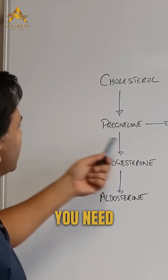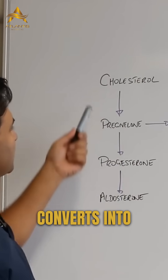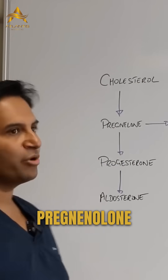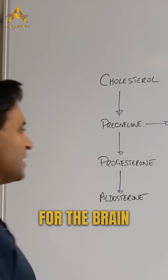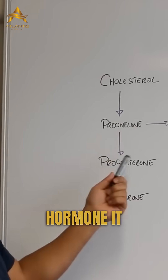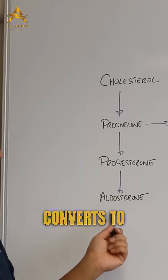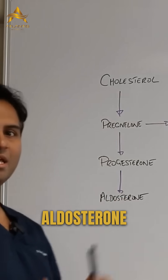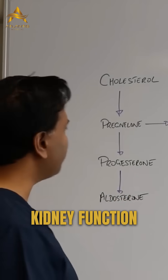Cholesterol converts into pregnenolone. Pregnenolone is really important for the brain and is also called the mother hormone. It converts to progesterone, which converts to aldosterone — important for kidney function.